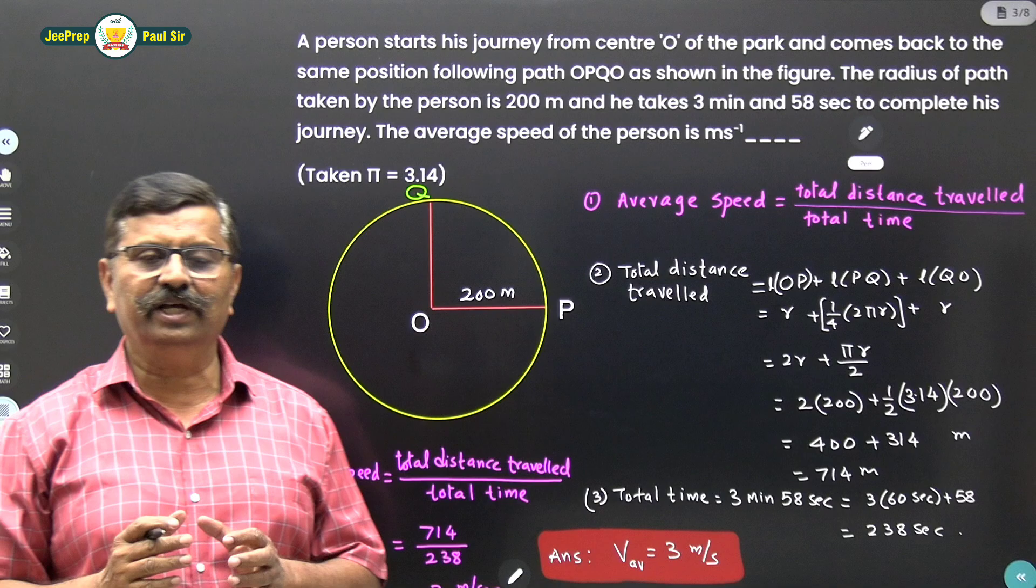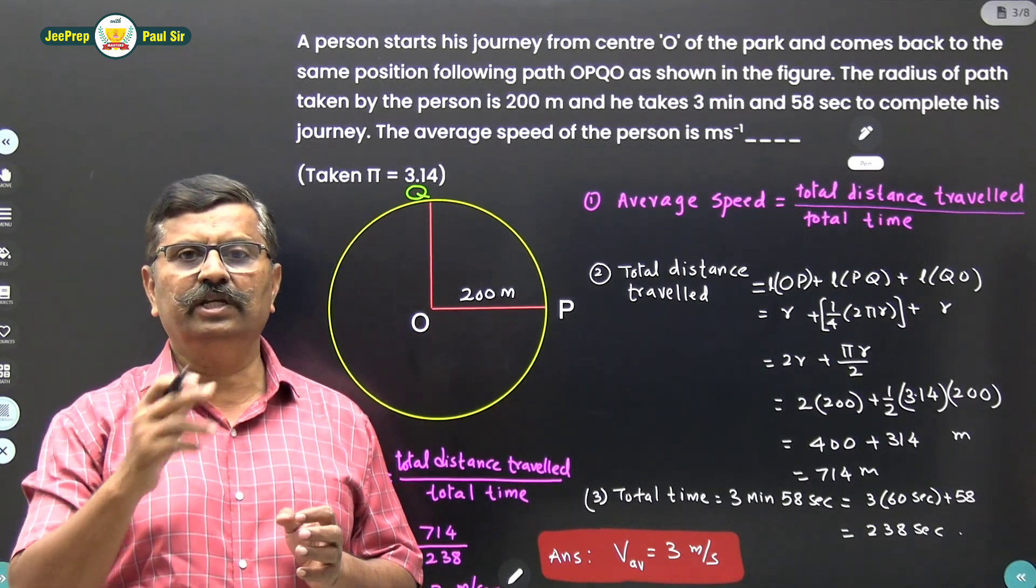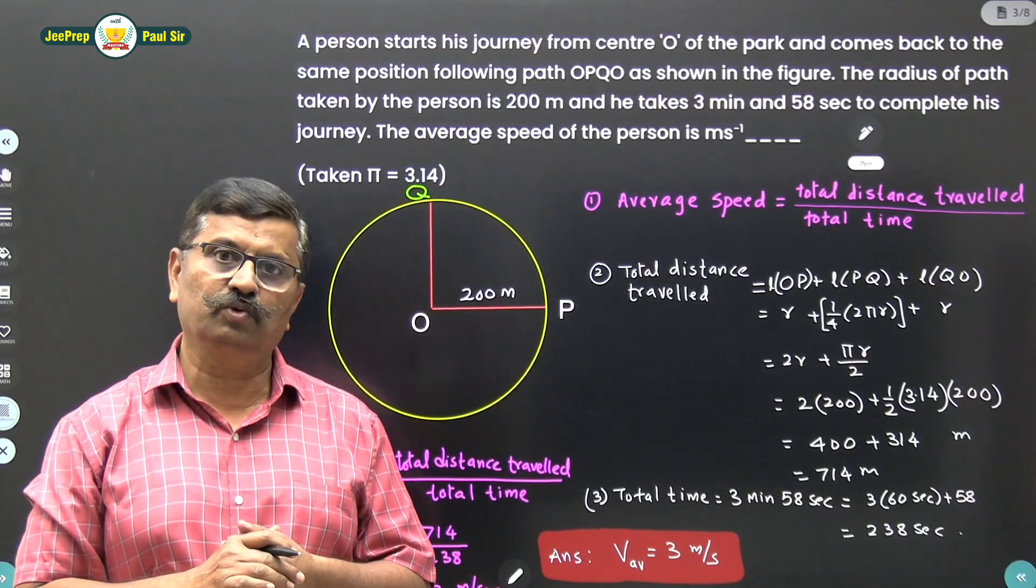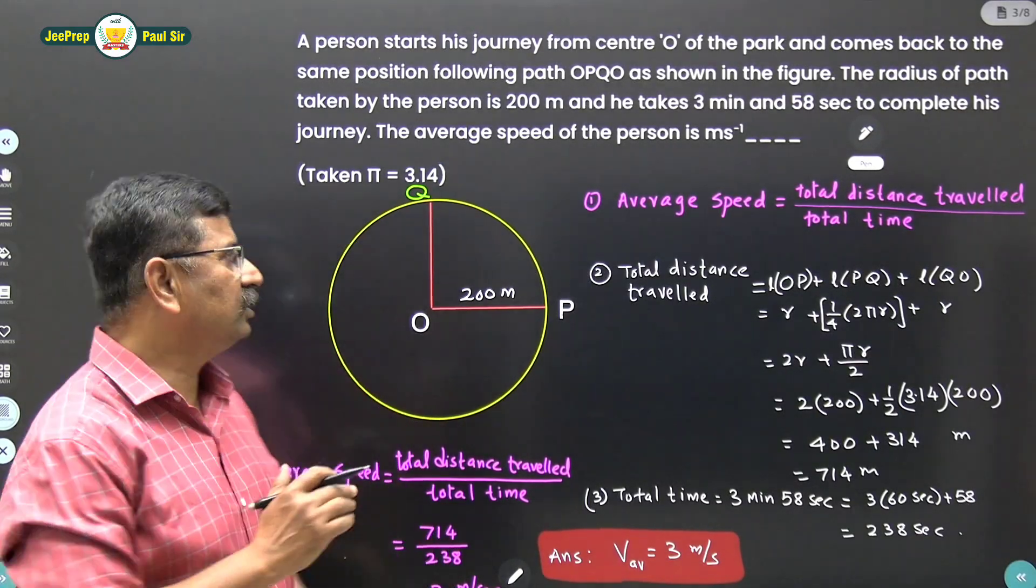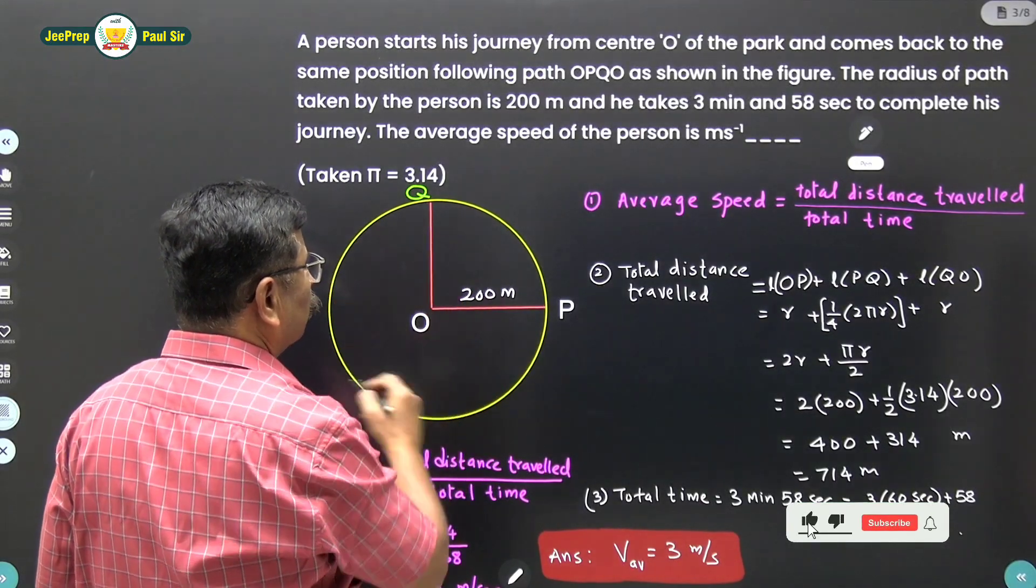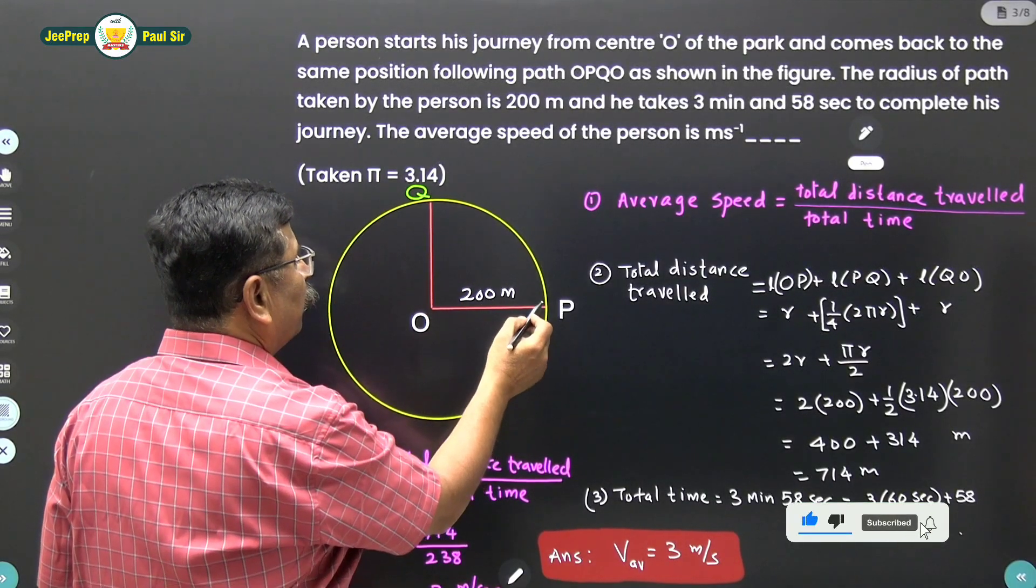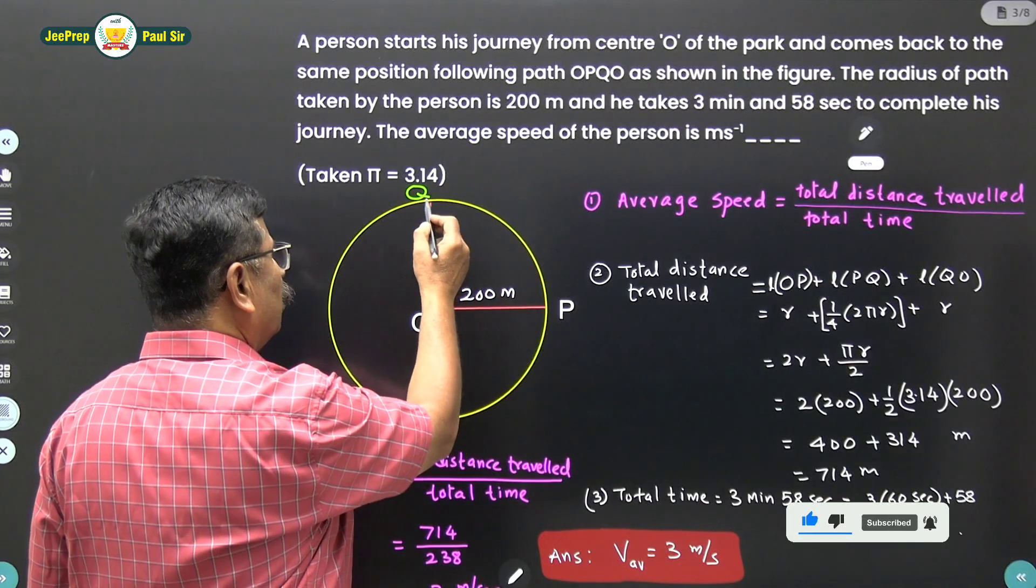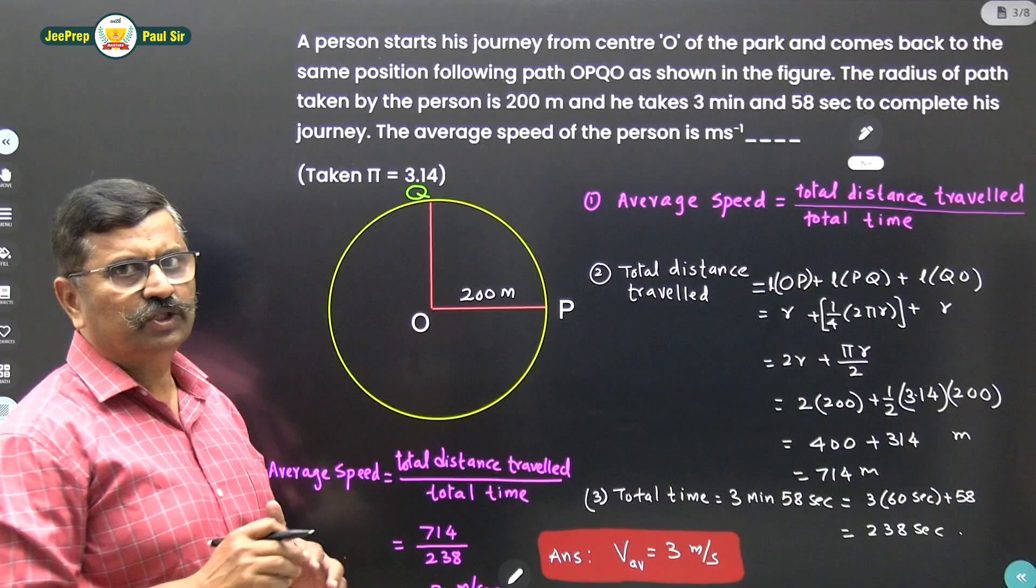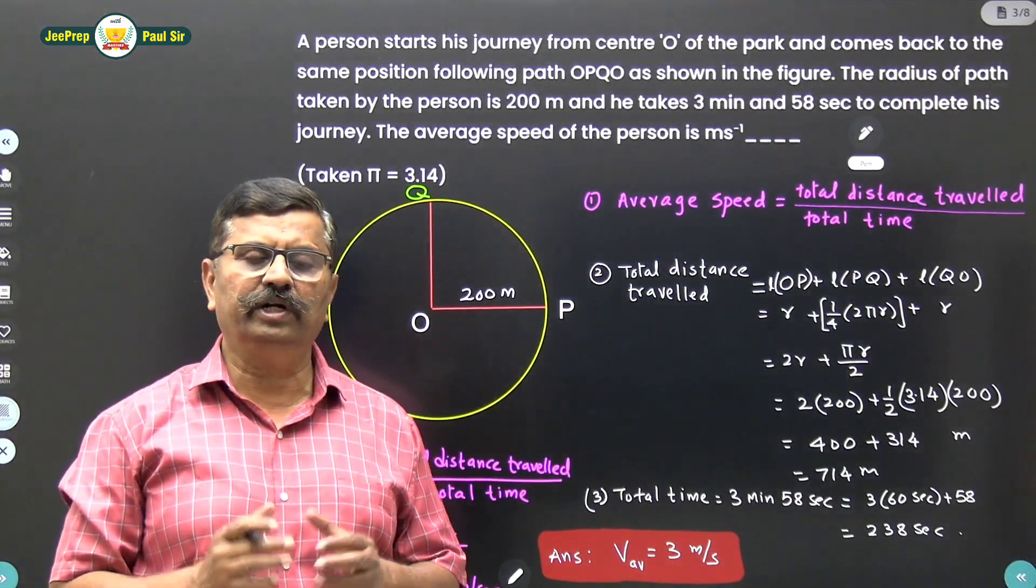See here we want to calculate the average speed. A person is along a circular path, the radius of the circular path is 200m. Now person starts from point O, he goes to point P, then moves along this arc till Q and comes back to O. Now in this problem we want to calculate average speed.